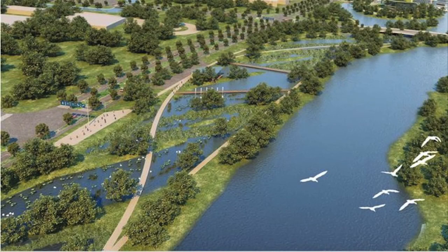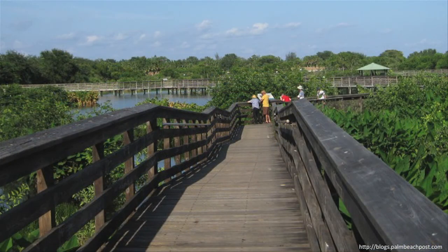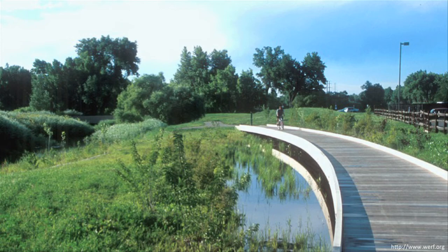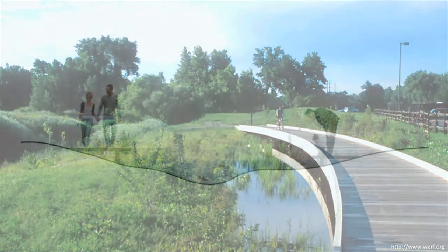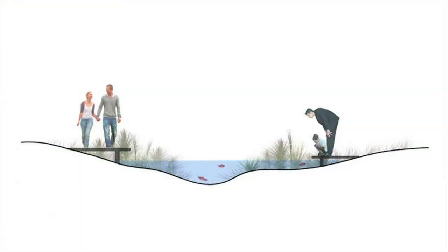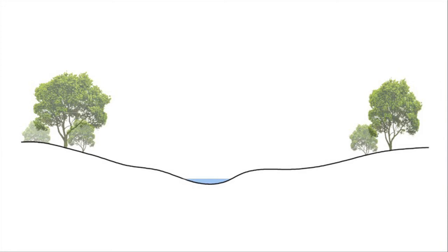Communities that view floodplains as natural assets, instead of problem areas to be engineered out of existence, benefit from the results. Parks, bike paths, open spaces, and wildlife conservation areas make communities more appealing to citizens, potential employers, property owners, and visitors. When the floodplain itself is altered by clearing vegetation or by building subdivisions, commercial development, or parking lots, the natural benefits of the floodplain are reduced or lost altogether.